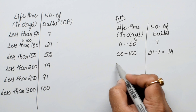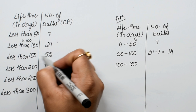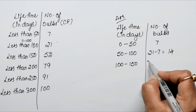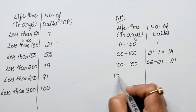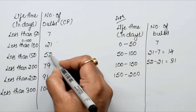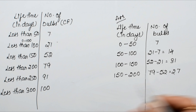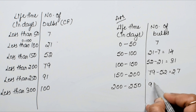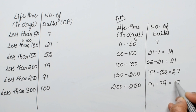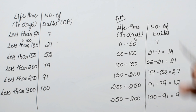For class 100 to 150: subtract the previous cumulative frequency from 52. For 150 to 200: 79 minus 52 gives 27. For 200 to 250: 91 minus 79 gives 12. For 250 to 300: 100 minus 91 gives 9.